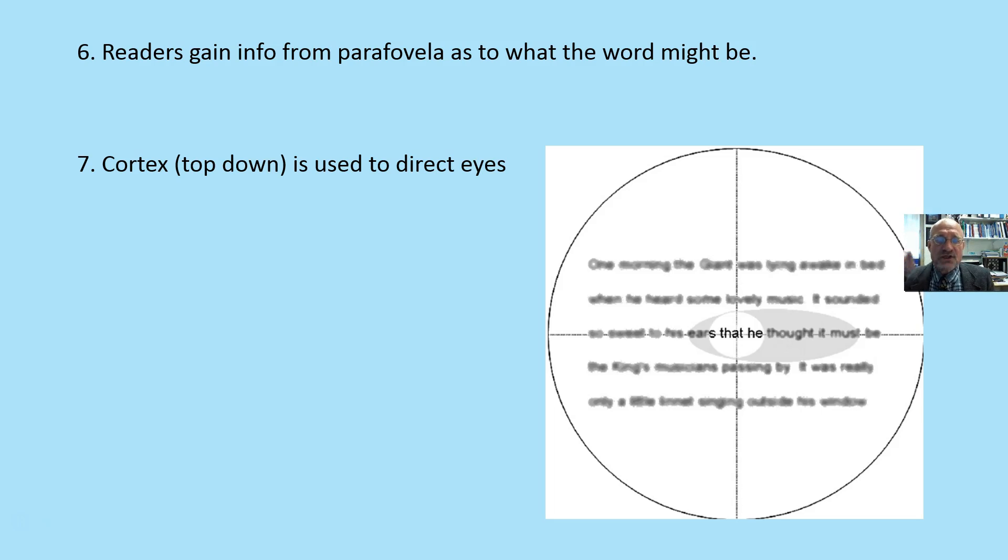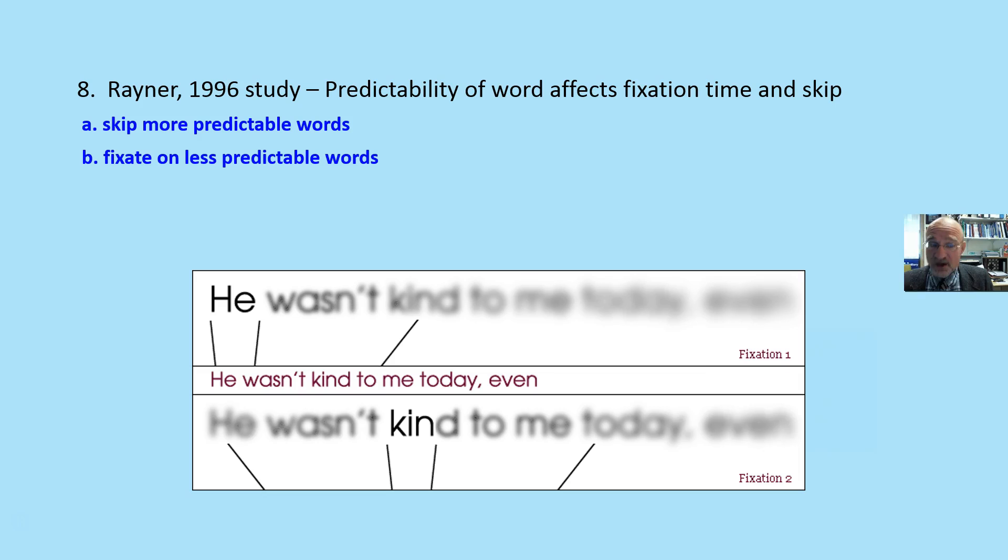The cortex is actually used to direct the eyes during the act of reading, where to fixate, what words to fixate on, and what part of the word. Rayner's 1996 study found that predictability of words affects fixation time. We skip more the words that are predictable, that make sense within the context of the sentence. We know what the next word might... You filled in the word 'be' there, didn't you? That's predictable. We fixate more on less predictable words.